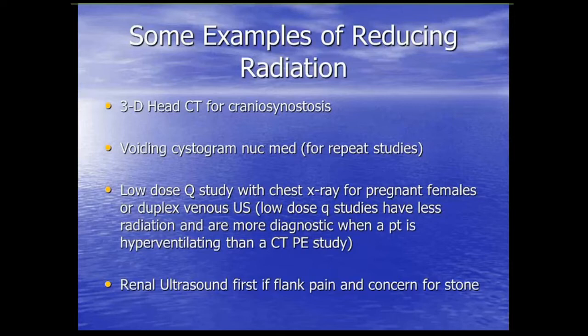Another dose-saving example: avoiding cystogram and nuclear medicine. For initial reflux testing you'd use a traditional fluoroscopic VCUG, but for repeat imaging a nuclear medicine cystogram can be lower radiation and sometimes more sensitive because you're imaging the patient longer — usually around 30 minutes. Another approach: a low-dose Q or perfusion study with a chest x-ray for pregnant females instead of a CTPE study. Using the chest x-ray as your ventilation component, if it's relatively normal you can do just the perfusion scan. CTPE studies in hyperventilating pregnant females are often nearly non-diagnostic — you can only exclude a large central PE. A perfusion study also reduces radiation to both mother and fetus.